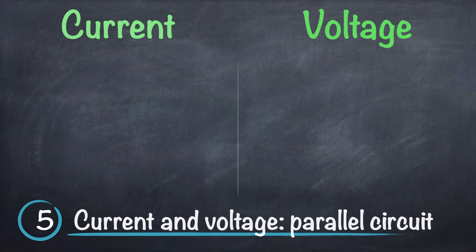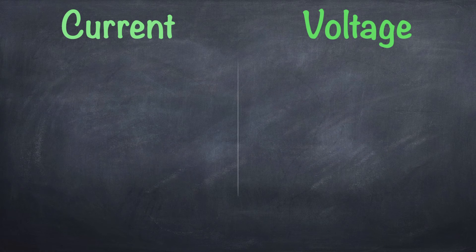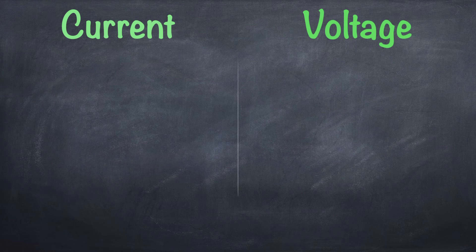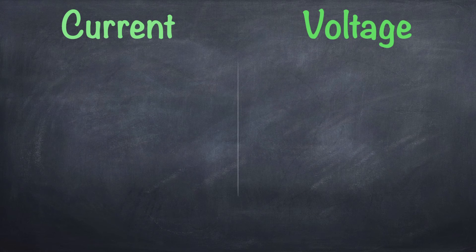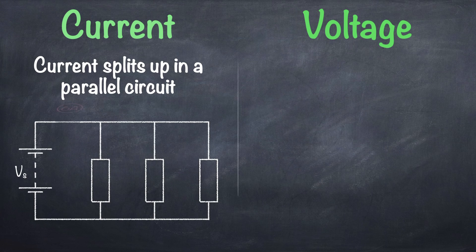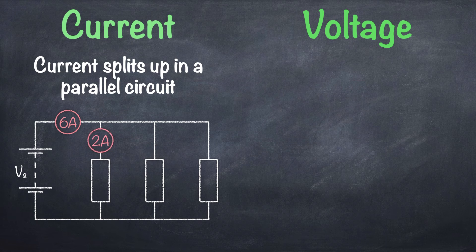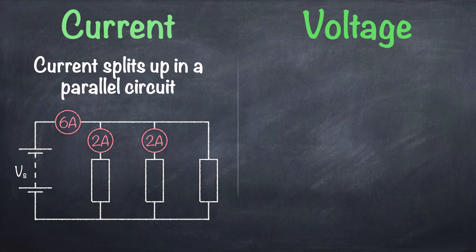Number five, current and voltage in a parallel circuit. The rules for current and voltage are reversed when looking at a parallel circuit. So where current in a series circuit is the same at all points, it splits in a parallel circuit. So if the current at this point in the circuit is 6 amps for example, we might get 2 amps in the first branch, 2 amps in the second branch and 2 amps in the third branch. Or 3 amps, 1 amp and 2 amps. Or 1 amp, 4 amps and 1 amp.